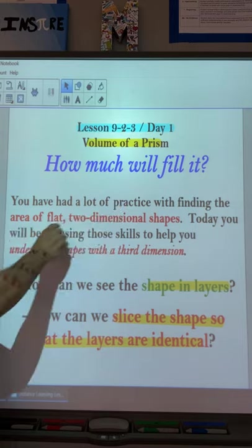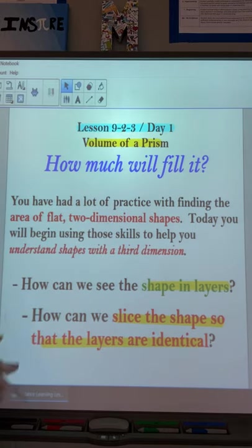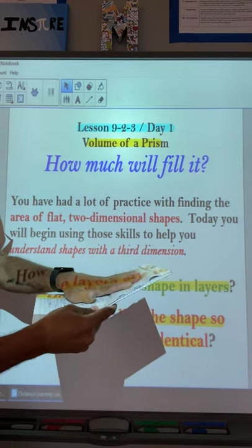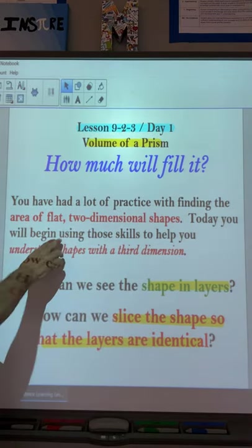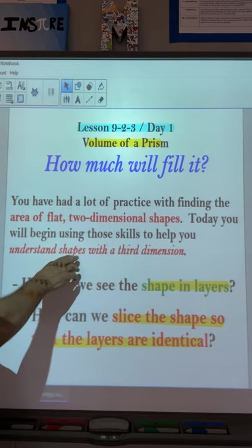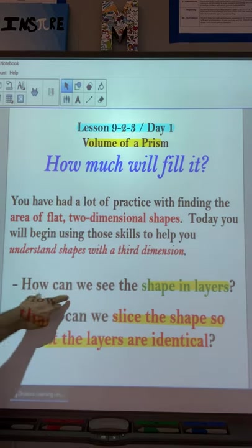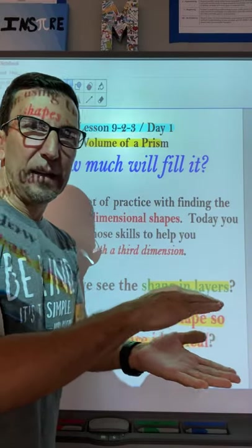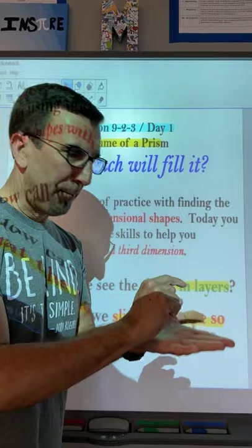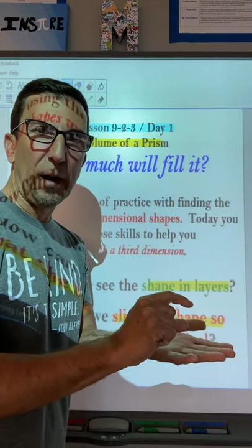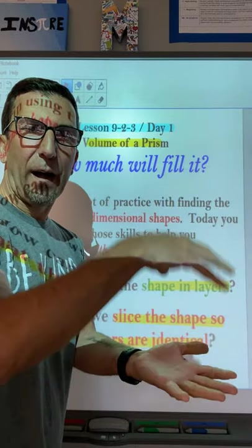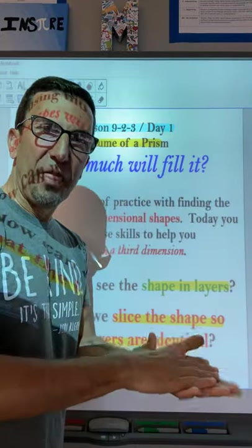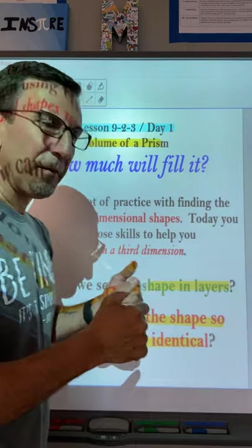If you had a lot of practice of finding the area of flat, two-dimensional shapes, for example, like a piece of paper. Flat, two-dimensional shapes, we can find that. But then, we're going to begin and enhance our skills to understand shapes with three dimensions. So how can you see the shape in layers? That's what I need you to really focus on. If I can figure out the bottom layer, the bottom edge, one high, that layer. And if I know the height of it, that should be easy. Just find the bottom layer and multiply it by the height. That would work. So that's what I want you to focus on.